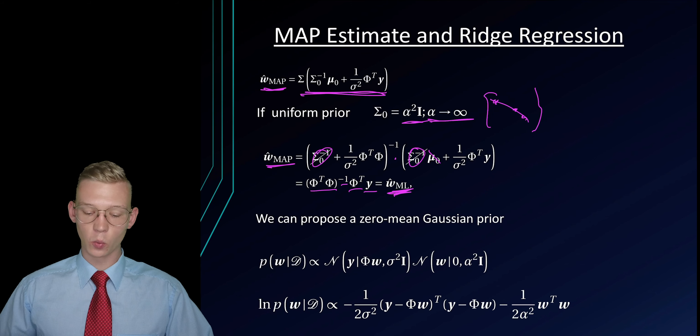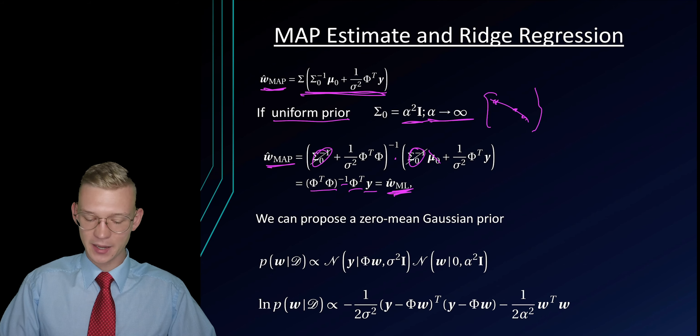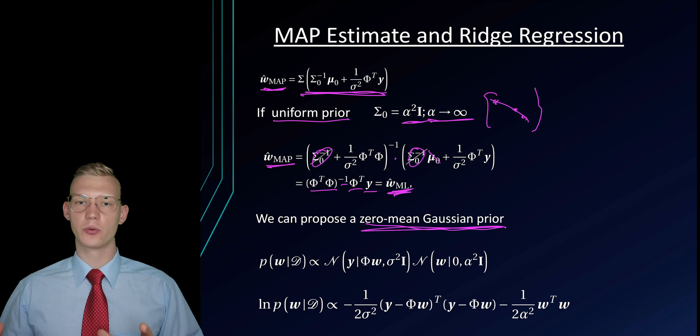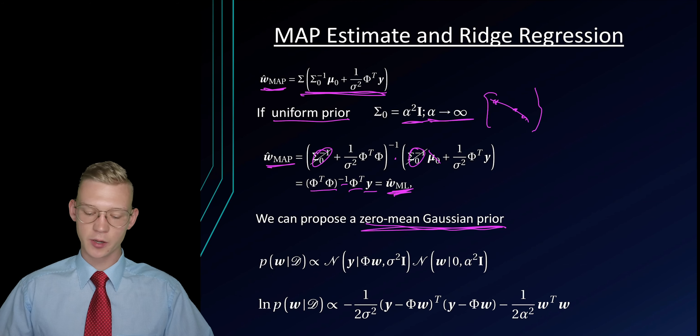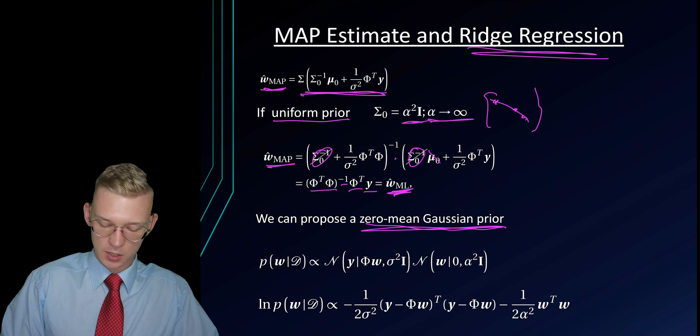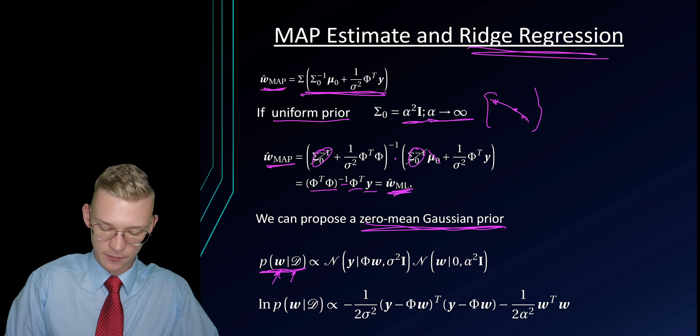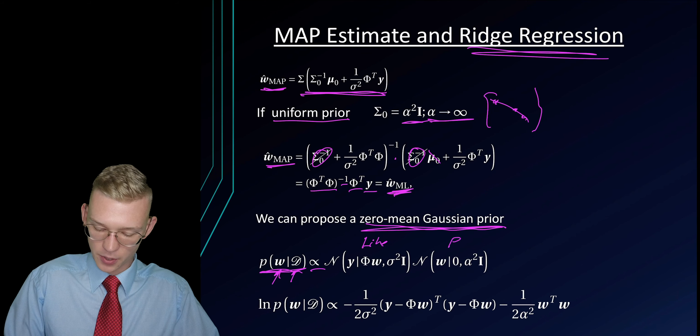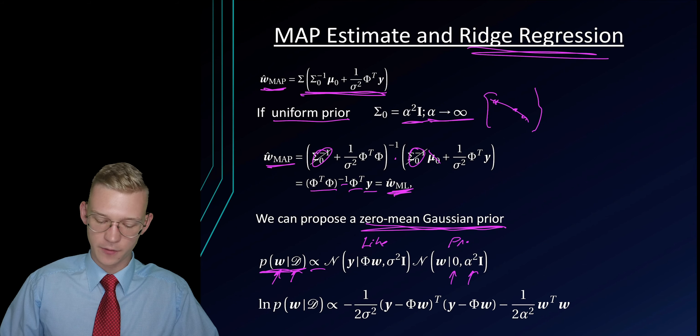Now we can go one step further and not propose a uniform prior, but a zero mean Gaussian prior. We're saying that we expect our parameters to be small and centered around zero. This is where the zero mean and the ridge regression comes into play. The probability of our parameters given the data are proportionate to this is our likelihood, and this is our prior, where we are centered around the mean with a given variance.